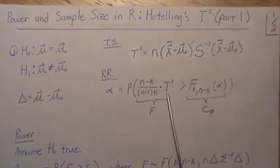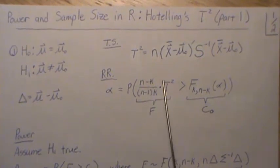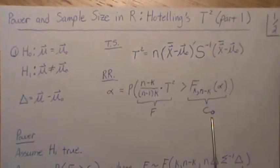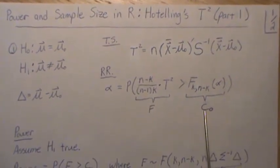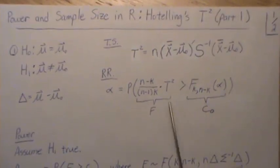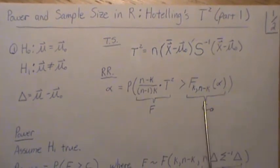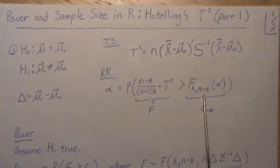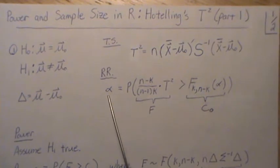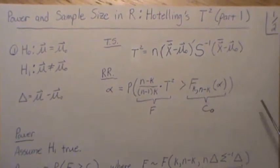And so we use this distributional property to pick a constant, which we call C0. It's the critical region under the null hypothesis. And if our test statistic is bigger than that, we reject. If it's not, we do not reject. But we pick this value that makes it alpha.